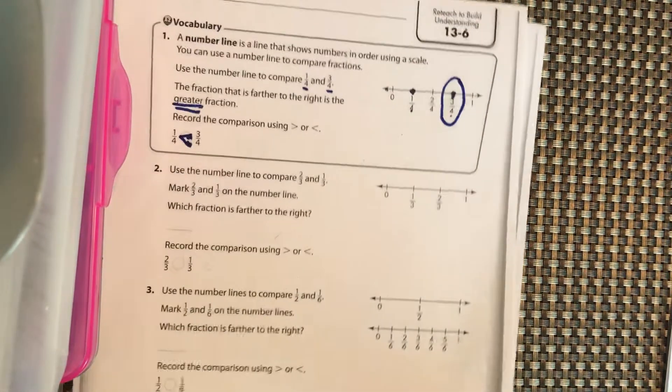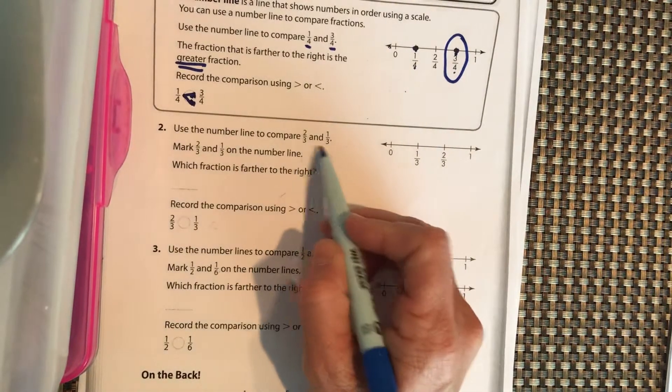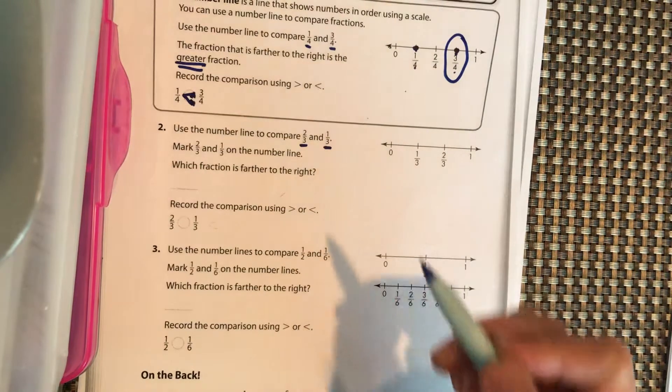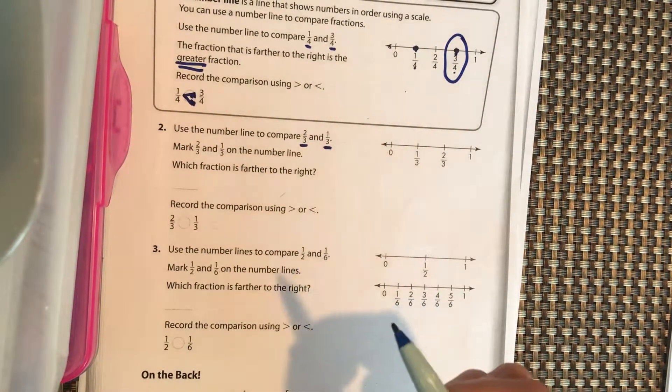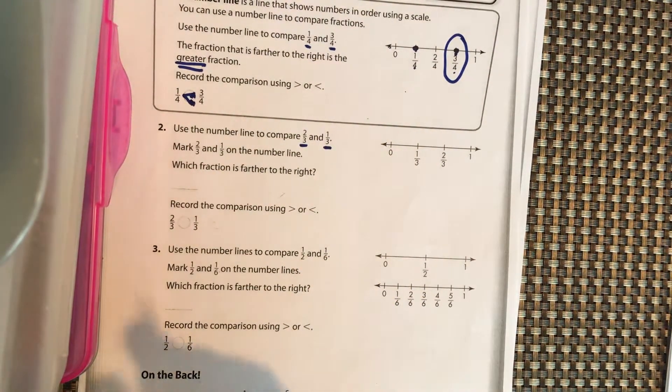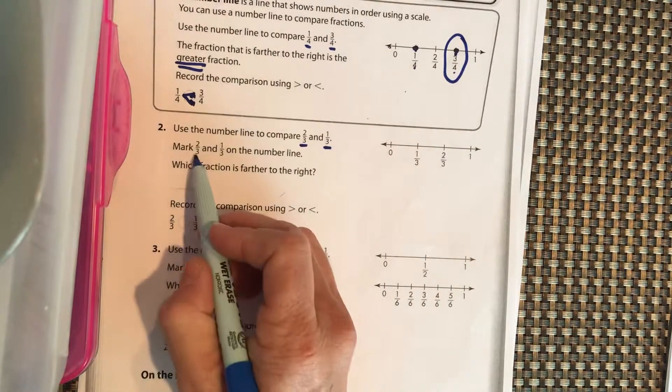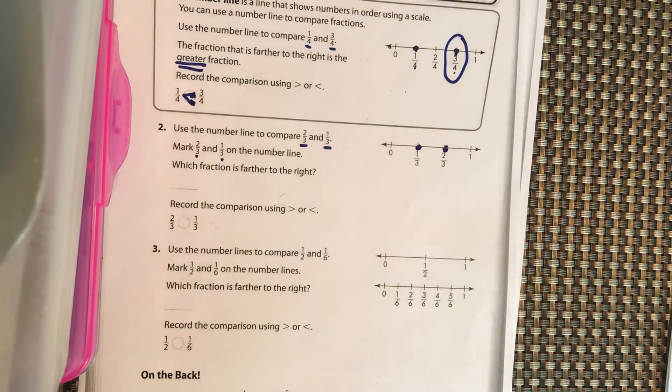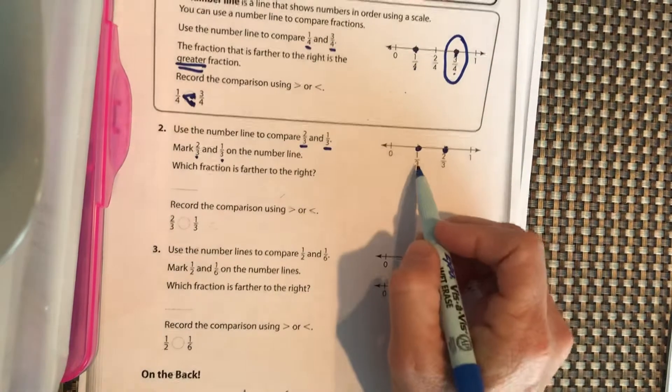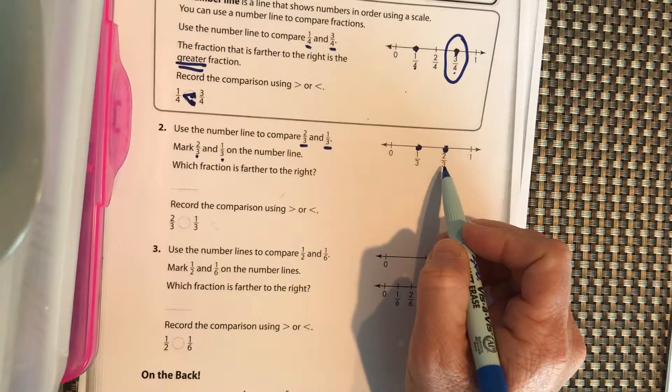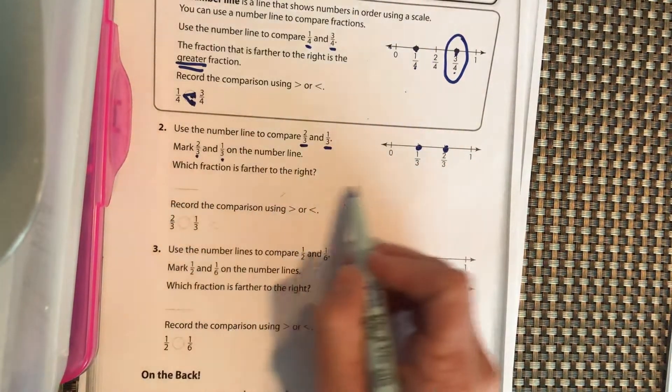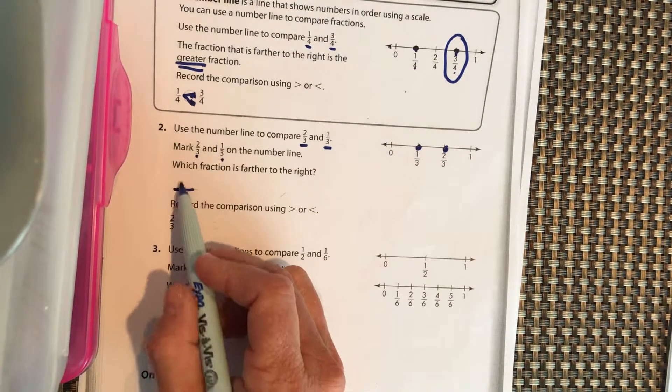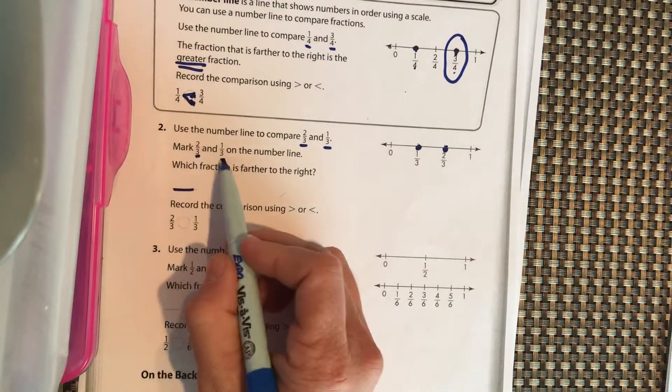Use the number line to compare 2/3 and 1/3. Again, our denominators are the same, we should have a party. That is super exciting and makes our life so much easier. So 2/3 compared to 1/3. All right, 1/3 and 2/3, which fraction is further to the right? That means bigger to the right, right? Write that right here. Write the fraction, which one is it, 1/3 or 2/3?